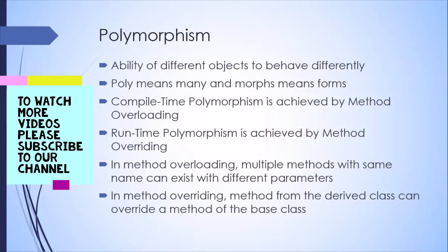In object-oriented programming, polymorphism can be achieved by two ways. One is method overloading and one is method overriding. You may have noticed that we have already used method overriding when we were extending our abstract class or implementing our interface — we were overriding a method which was already declared in some other class. That's what method overriding is.